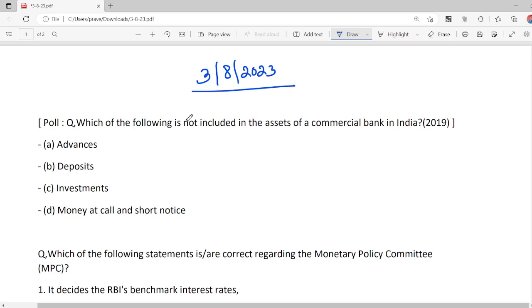Which of the following is not included in the assets of a commercial bank? Banks are companies, so they have assets and liabilities. Deposits give profit to investors when they deposit to the bank.